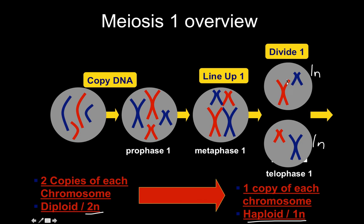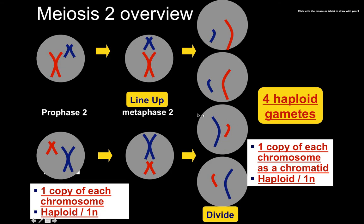In the second part of meiosis, we take those two haploid cells, line up the DNA again, and split apart the chromosomes into chromatids. We start with one copy of each chromosome — still haploid — and after this second division we're left with four haploid gametes. These four haploid gametes are the sex cells, developing into sperm or egg cells depending on whether the individual is male or female.